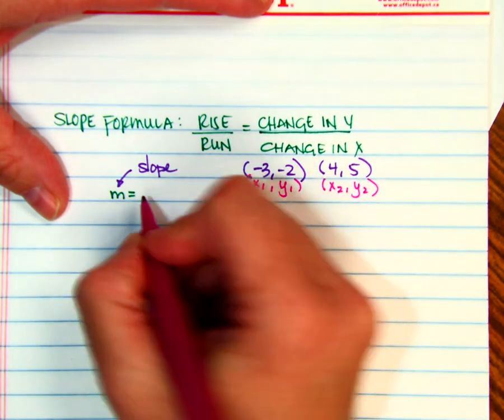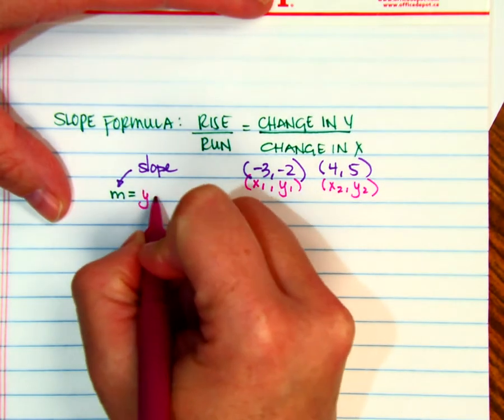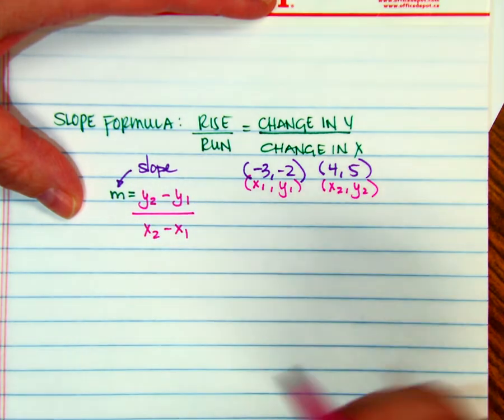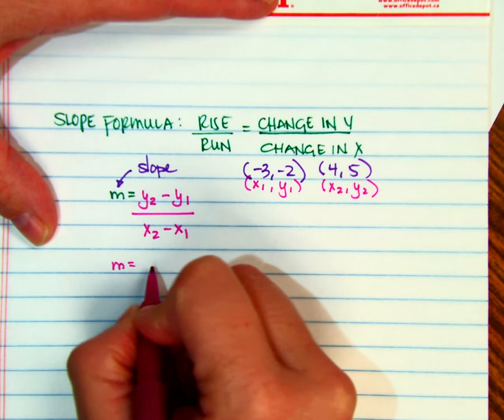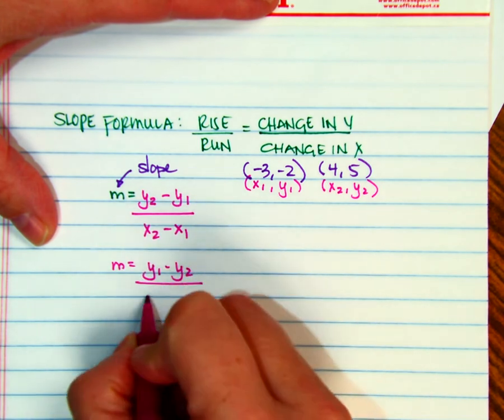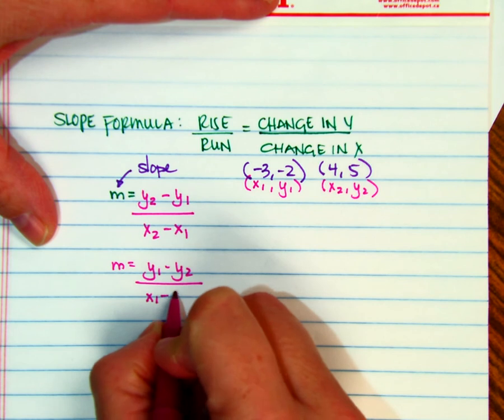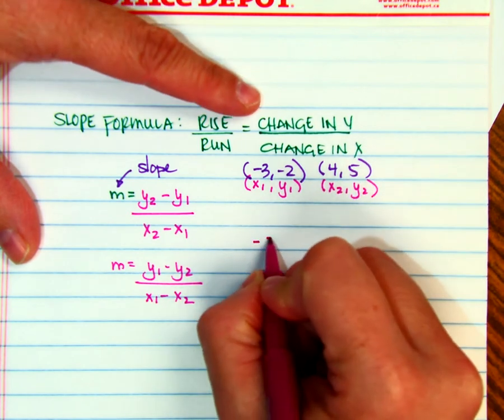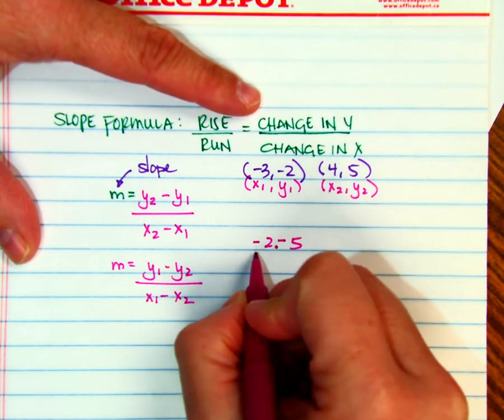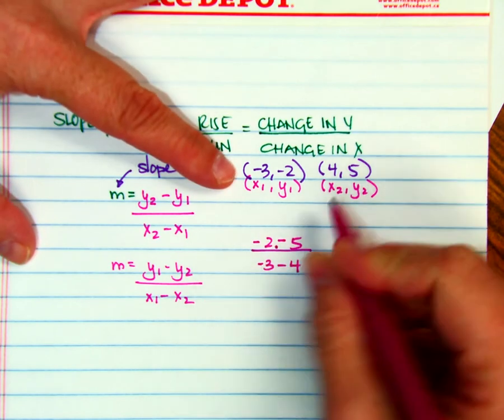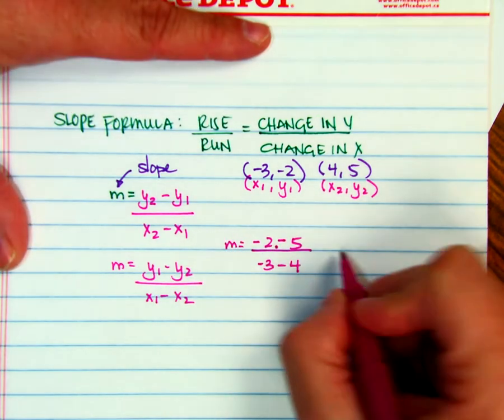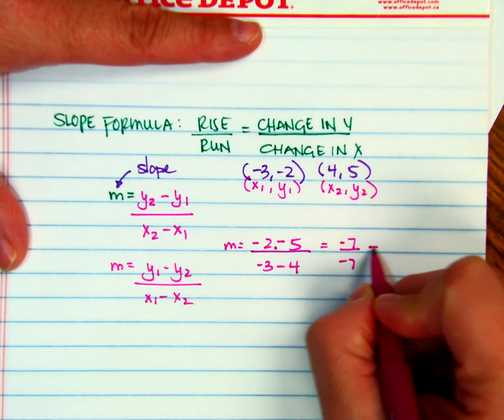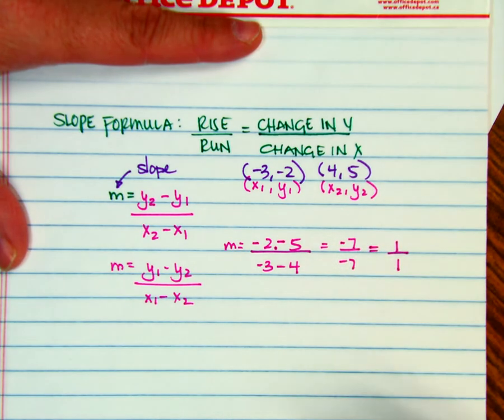Okay, so we are going to use, depending on the teacher, you might see it two different ways. A lot of times you'll see it as y sub 2 minus y sub 1 over x sub 2 minus x sub 1. And honestly, it doesn't make any difference as long as you are consistent. You just have to be consistent. So negative 2 minus 5 over negative 3 minus 4. And that would give me negative 7 over negative 7. Negative divided by negative is a positive, and we reduce that to 1 over 1, which is what we did when we counted the boxes.